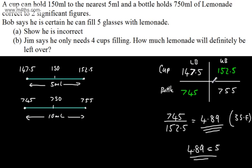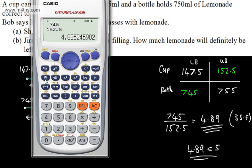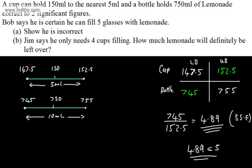Now if we looked at the best case scenario, we might have 755ml and the cups might be small. If that was the case, what we'd clearly see is that 755 over 147.5 means that he's going to certainly fill more than 5. So we can see 5.11.